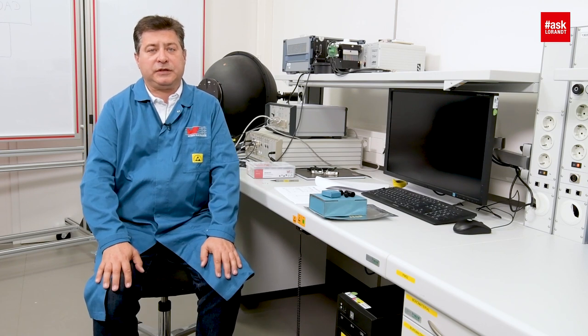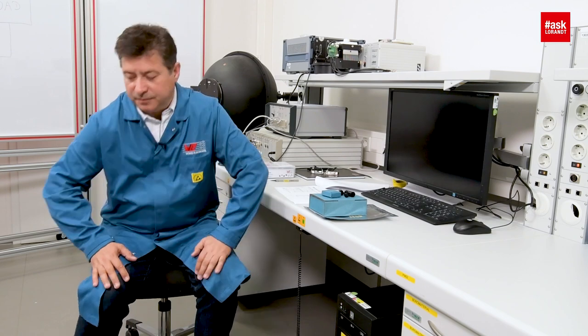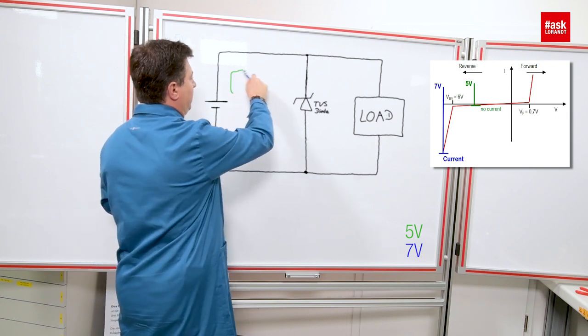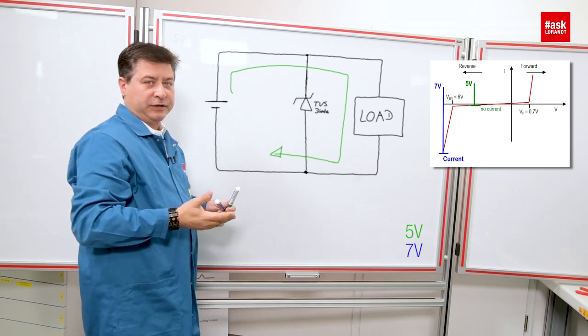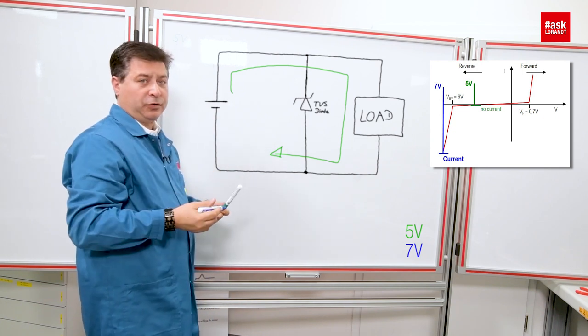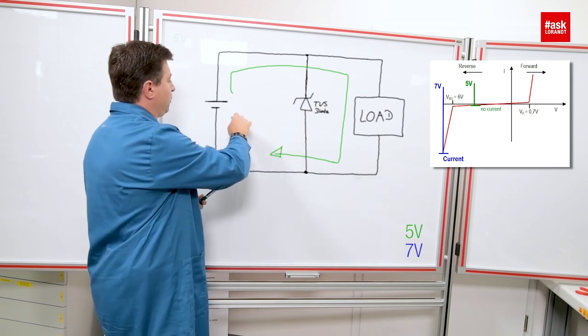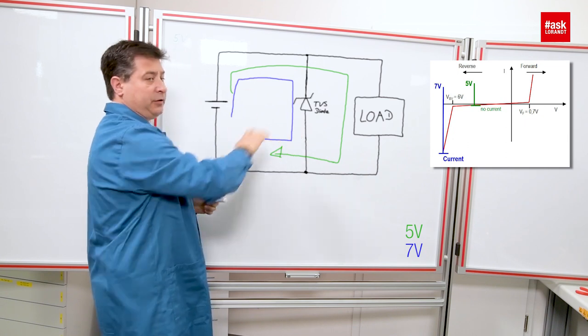TVS diodes are used in reverse, so they are blocking the over-voltage and current from reaching your device. I will now draw the current flow through the TVS diode during normal voltage and during over-voltage. In normal operating voltage, the current flows from the battery to the load and back. When you have a surge voltage, over-voltage, or ESD discharge, the voltage will not pass your load — it will run from the source to the diode and come back, protecting your device.